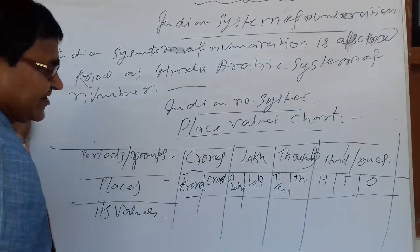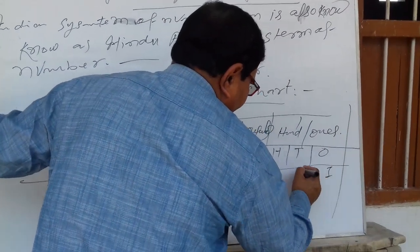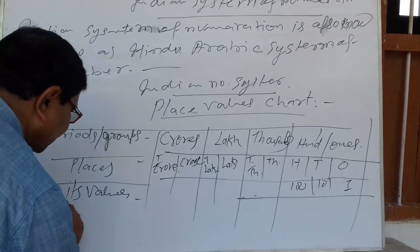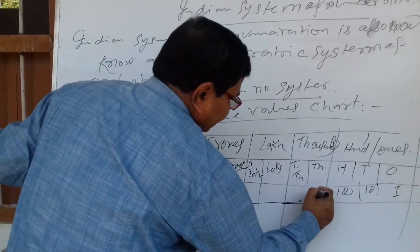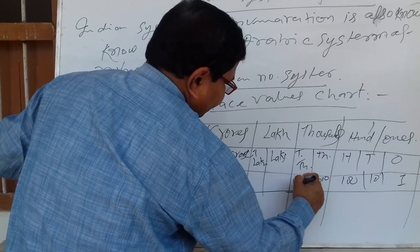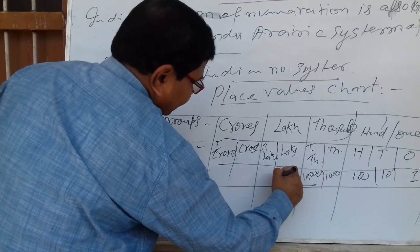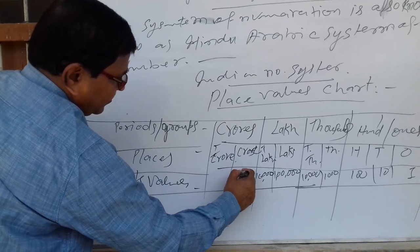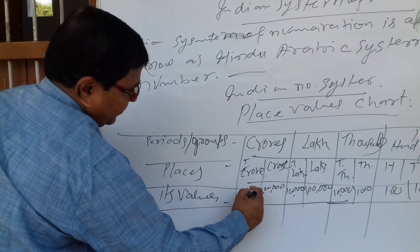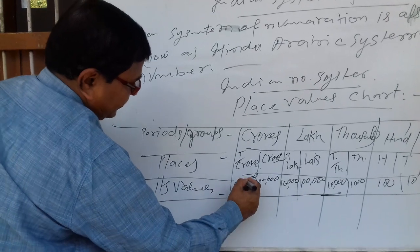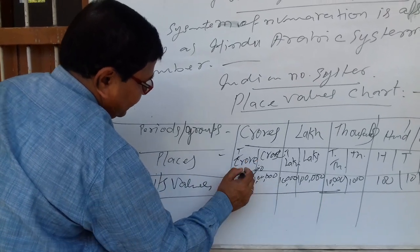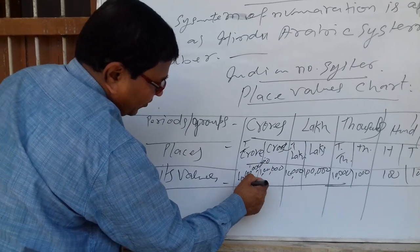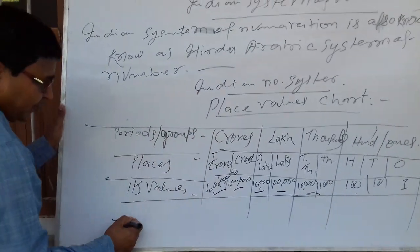As for its places: one for one, ten for ten, hundred for one hundred — its place value. The places are: thousands, ten thousands, lakhs, ten lakhs, crores, ten crores. So the numbering is split into places: one, ten, hundred, thousand, ten thousand, lakh, ten lakh, crore, ten crores.